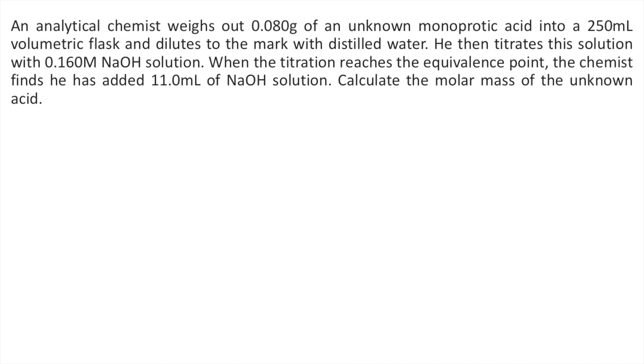An analytical chemist weighs out 0.080 grams of an unknown monoprotic acid into a 250 mL volumetric flask and dilutes to the mark with distilled water. He then titrates this solution with 0.160 molar sodium hydroxide solution. When the titration reaches the equivalence point, the chemist finds he has added 11.0 mL of NaOH solution. Calculate the molar mass of the unknown acid.